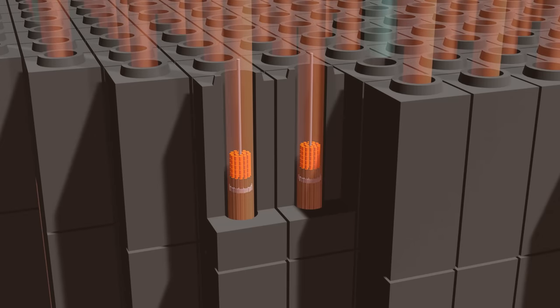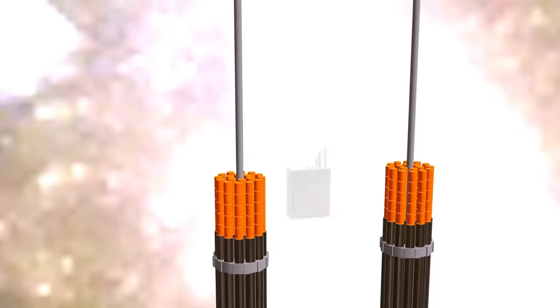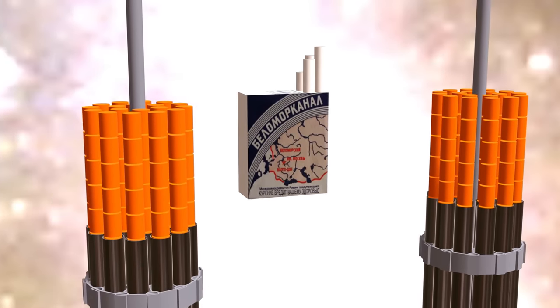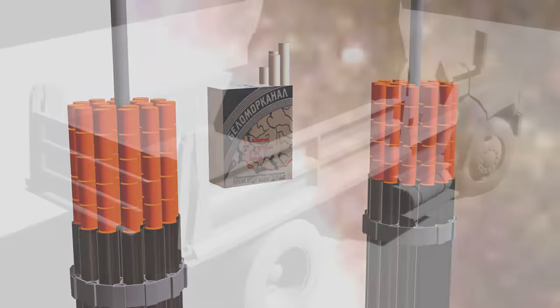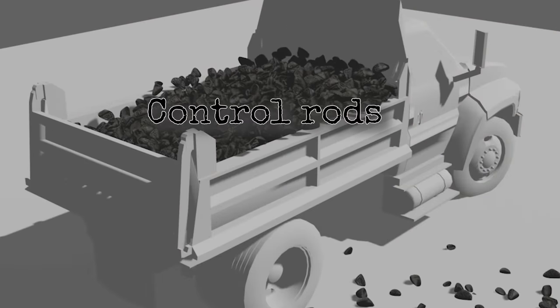Each graphite block has a hole down the center which contains the pipes for the fuel channels and control rods. Water flows inside these pipes at high pressure. The uranium fuel is formed into these small pellets. Each pellet is extremely fuel dense and contains the heat energy equal to a truckload of coal.